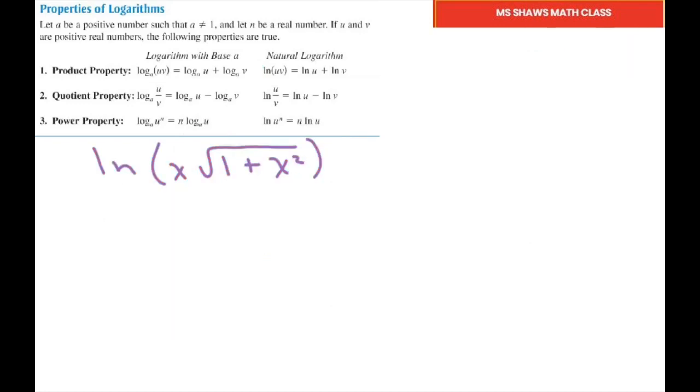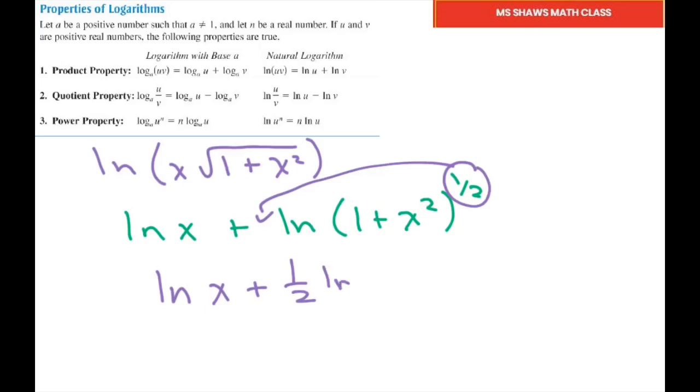Alright, and the last one's very similar. So we're going to write ln of x plus ln of 1 plus x squared. And this is to the 1 half. So now just bring this 1 half in front here. So you have ln of x plus 1 half ln of 1 plus x squared. And that's it.